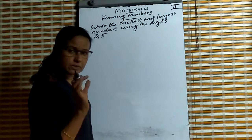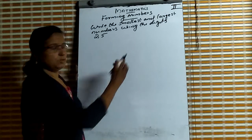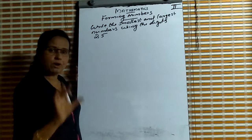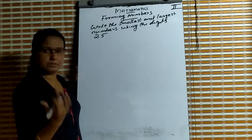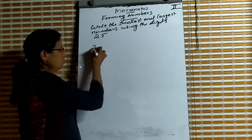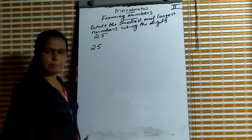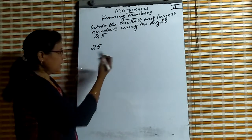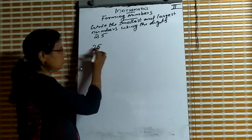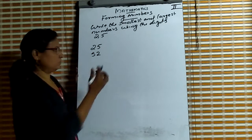Write the smallest and largest numbers using the digits 2 and 5, once each. That means never repeat the 2 and 5. Using 2 and 5, we can form two numbers.